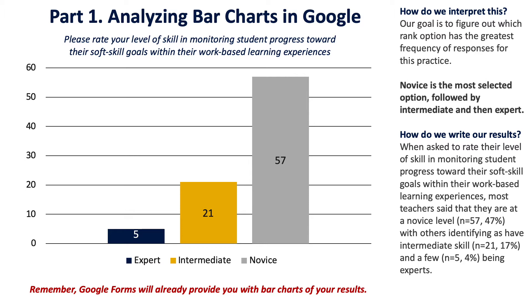In this example, I have a bar chart with responses to the question: 'Please rate your level of skill in monitoring student progress toward their soft skill goals within their work-based learning experiences.' This is example data — not actually real. Teachers were given this question on a three-point scale from expert to intermediate to novice. We can see a pretty big difference between novice, intermediate, and expert in terms of the number of people who responded to each.